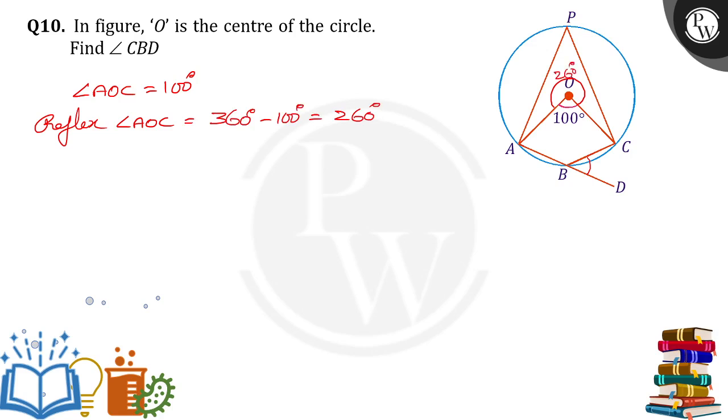So this angle is 260 degrees. Now, this is the angle made by AC and this is also the angle made by AC only. So angle ABC is equal to, which is the angle made by the arc at the circle and 260 is the angle made at the center.